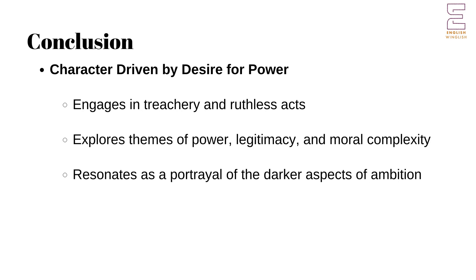King John is a character driven by a fierce desire to secure his throne, engaging in treachery and ruthless acts to maintain his power. His actions and motivations highlight the themes of power, legitimacy, and the moral complexities of kingship. Through King John, Shakespeare examines the ethical dilemmas and political maneuverings that characterized the pursuit of power. John's legacy as a treacherous and ruthless monarch continues to resonate, providing a compelling exploration of the darker aspects of human ambition and the complexities of political leadership.